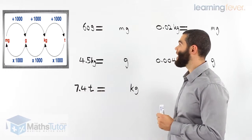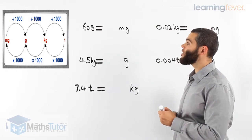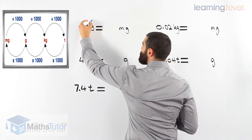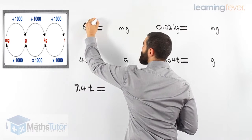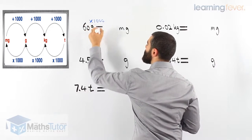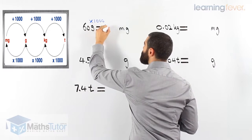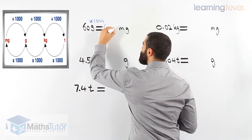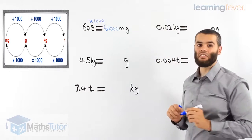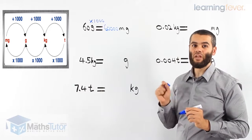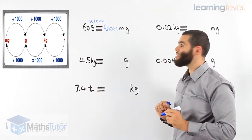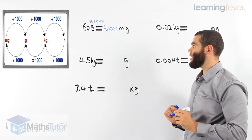Let's see how it's done. Grams to milligrams — we times by a thousand. Very straightforward. Sixty times a thousand gives sixty thousand milligrams in sixty grams. Very small unit. Sixty grams has sixty thousand milligrams.